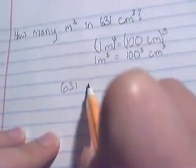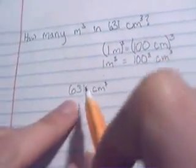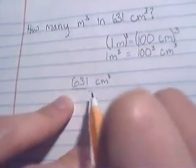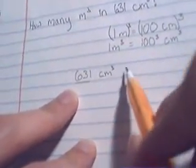So 631 centimeters cubed. Don't forget to think about your sig figs. This is three sig figs so you're going to want to keep that many in your final answer.